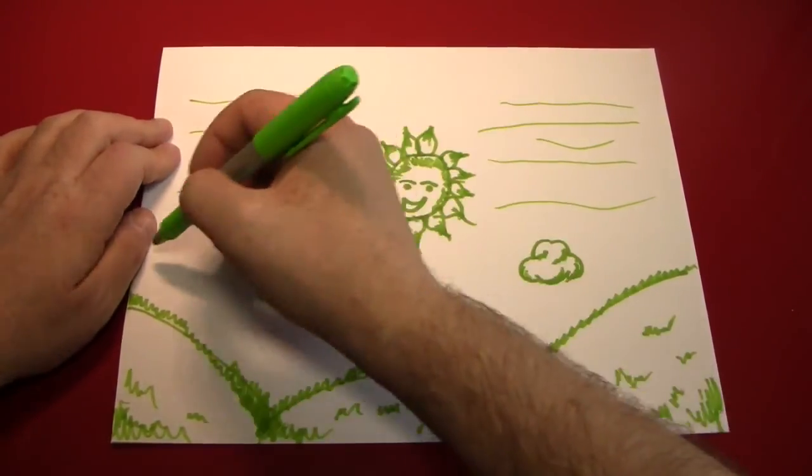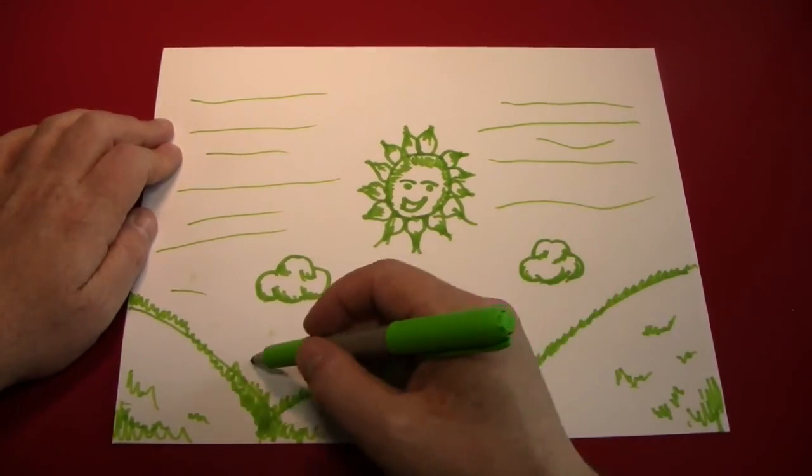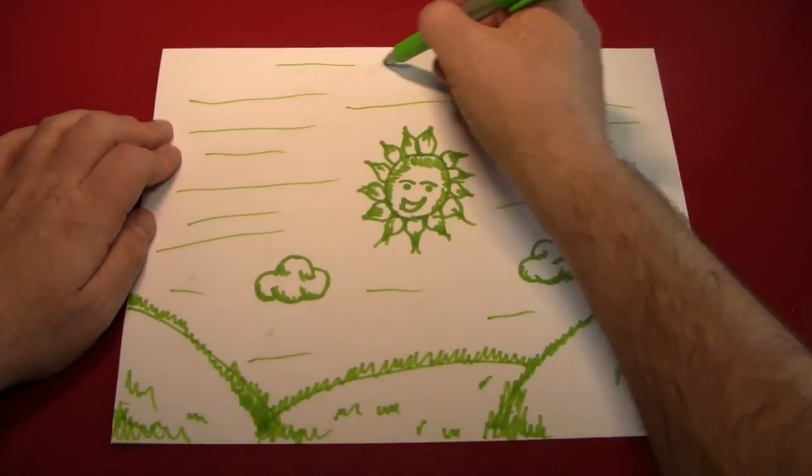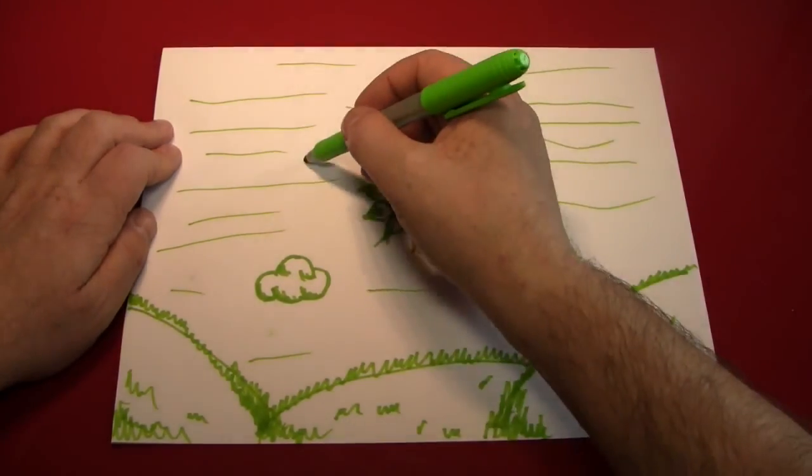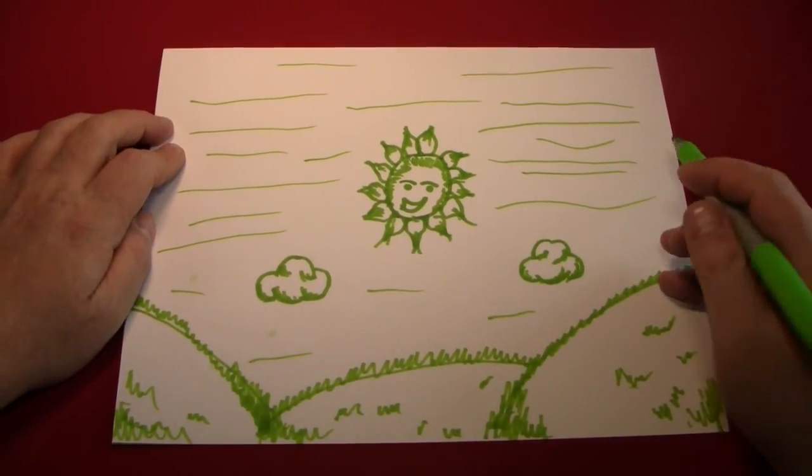If you've enjoyed this picture, if you enjoyed this video, please hit like, hit subscribe, share it with your friends. Remember, you can indicate the sky by just making little horizontal lines like this, apparently. Subscribe to the channel.